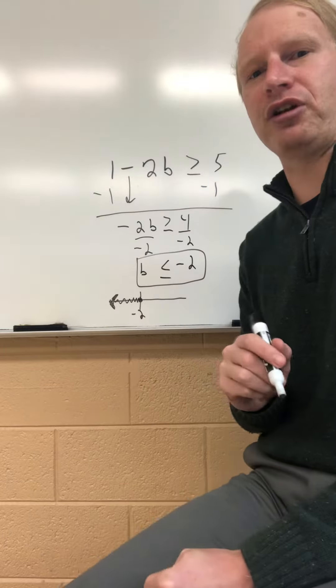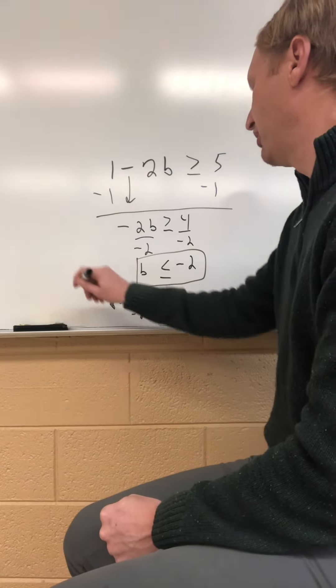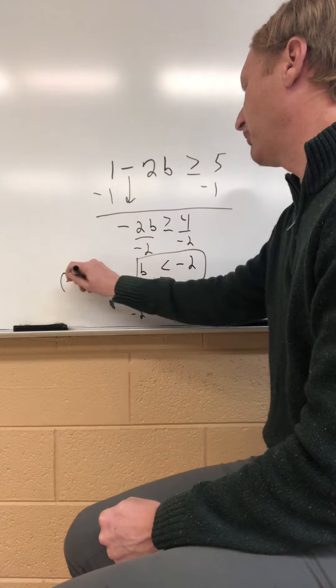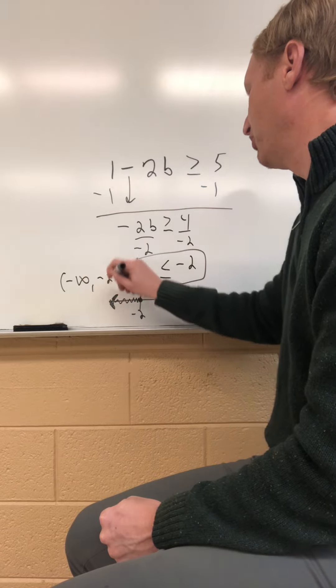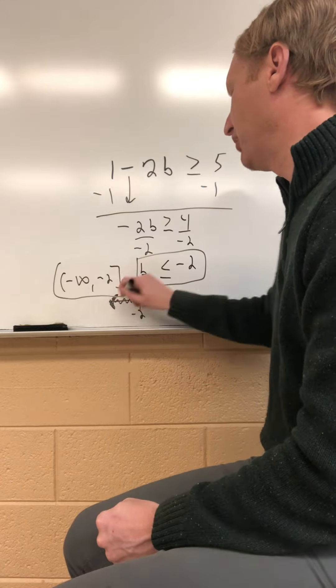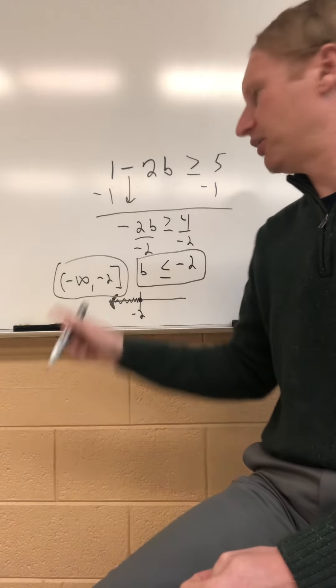If you're asked to put this in interval notation, a lot of students in algebra are not, that would be everything from negative infinity to negative 2 with a bracket around the negative 2 because it can equal negative 2.